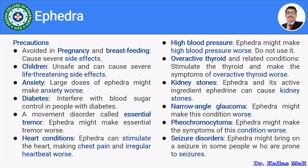Ephedra should be avoided in narrow angle glaucoma, as the condition becomes worse. It should also be avoided in pheochromocytoma. Finally, if the patient has a risk of seizure disorders, ephedra and ephedra-related products should be avoided as it can produce seizures. These are the precautions and warnings related to pregnancy, breastfeeding, children, anxiety, diabetes, essential tremor, heart conditions, high blood pressure, overactive thyroid, kidney stones, narrow angle glaucoma, pheochromocytoma, and seizure disorders.